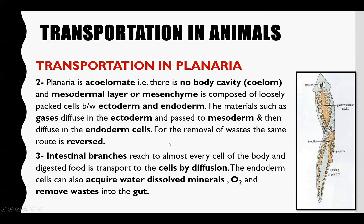Planaria also has a branched intestine. The branches communicate with the cells and deliver nutrients to them. The undigested materials move from the intestine through the pharynx, which is connected with the mouth and is a protruding structure. The undigested waste materials exit through the pharynx into the external environment.